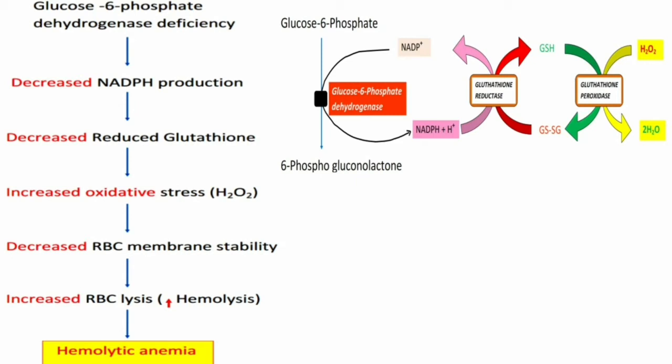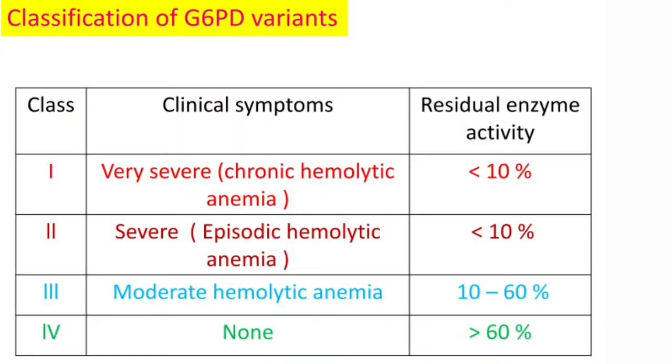Due to accumulated oxidative agents, RBC membrane stability is decreased — the integrity of the RBC membrane is affected. Decreased membrane stability leads to increased RBC lysis, that is, increased hemolysis. This increased hemolysis results in anemia, which we call hemolytic anemia. These are the sequence of events leading to hemolytic anemia due to glucose-6-phosphate dehydrogenase deficiency.